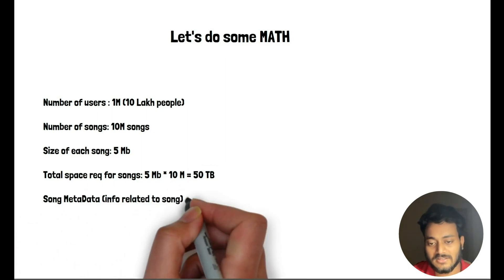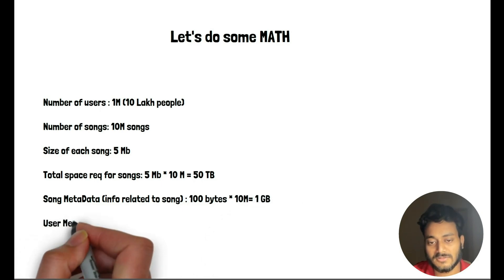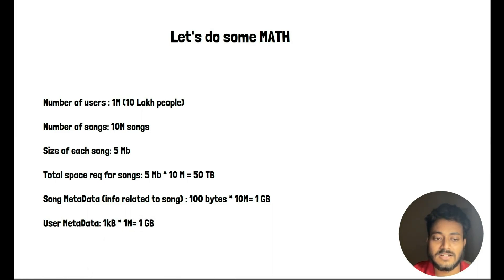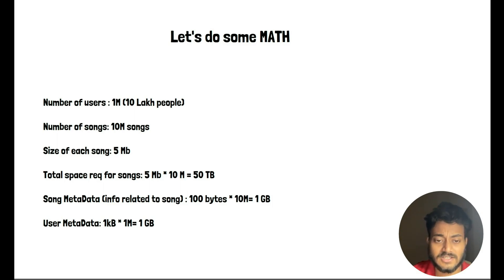Song metadata — the information related to each song — should be small: 100 bytes multiplied by the total number of songs, that is 10 million, which comes out to be 1 GB. User metadata, with a size of 1 KB per user, also comes out to be 1 GB. So these are some of the initial numbers we'll be designing the application for.